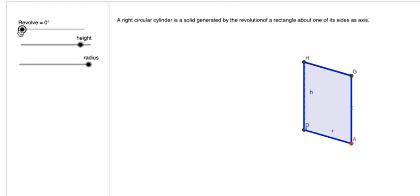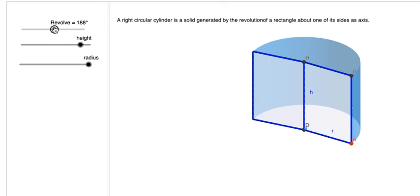It is a rectangle with sides H and R that are ultimately going to be the radius and height of the cylinder. Revolving this rectangle along this axis forms a cylinder.